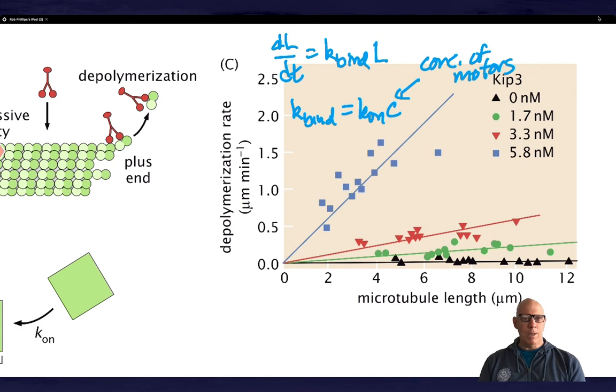And these straight lines are the theoretical interpretation that we just gave. In other words, that's shown right here. We're saying the longer the microtubule is, the faster the depolymerization rate will be, which is what we see right here. So that's the essence of what I wanted to say.